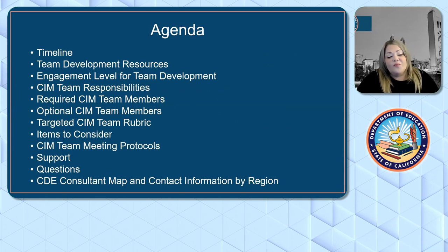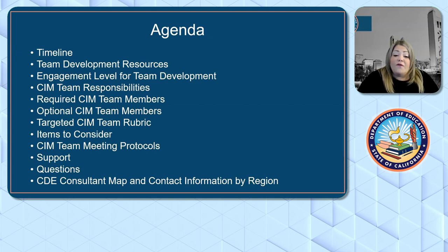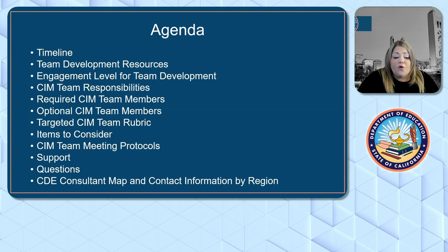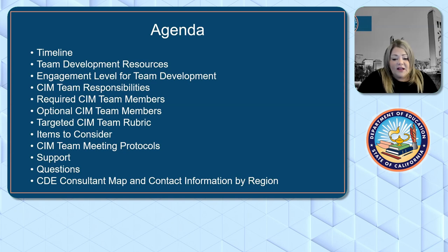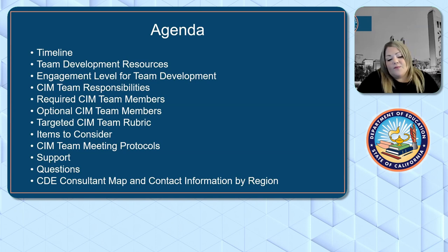So what are we doing today? We will take a look at the timeline — where we are now and where we are heading. We will provide some team development resource links, go over the engagement level for team development, go over the sim team responsibilities and who the required sim team members are. We will show you our updated targeted sim team rubric, speak about items to consider while developing your team, and provide sim team meeting protocols from our system improvement leads partners — referred to as SIL. Finally, we will end with support questions and your consultant map by region.